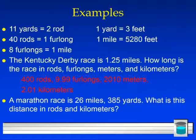What about this one? A marathon race is 26 miles, 385 yards. What is this distance in rods and kilometers? Go ahead and press pause now. Let's see how we did. We have 8,390 rods and 42.195 kilometers.